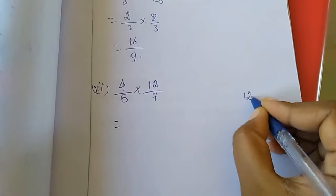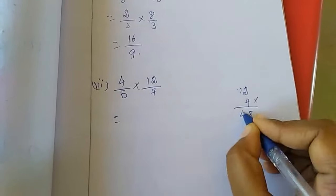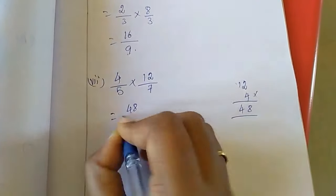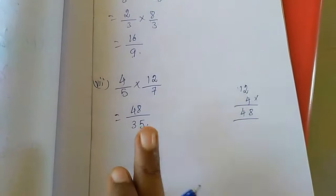This is also 4, 12. So 12 into 4, that is 4 times 4 is 2, 8, 4, so 48. So 48 divided by 7 times 5 is 35.